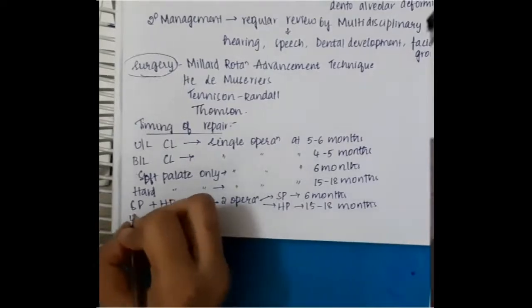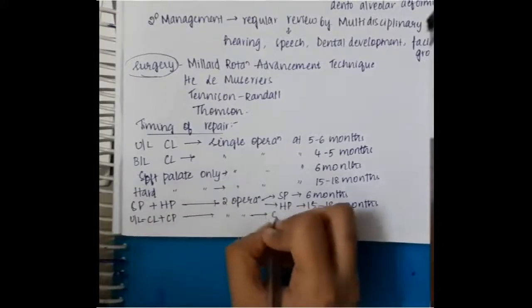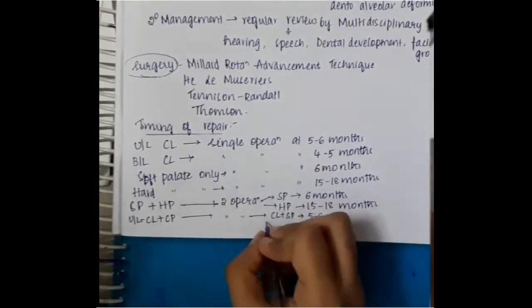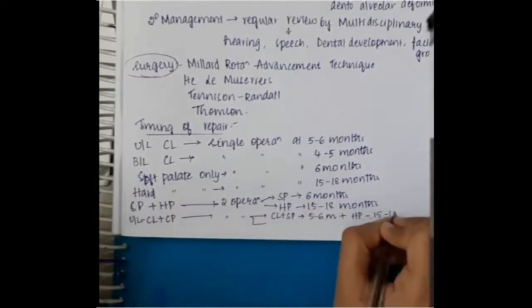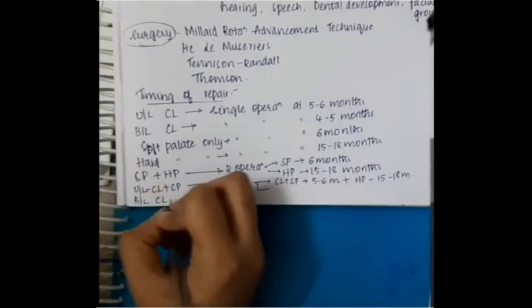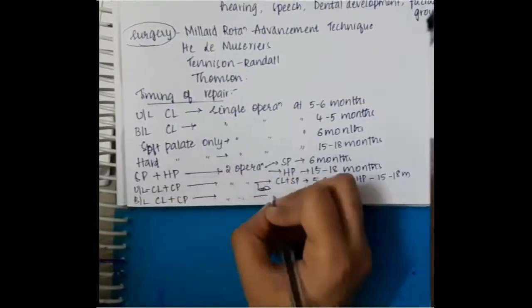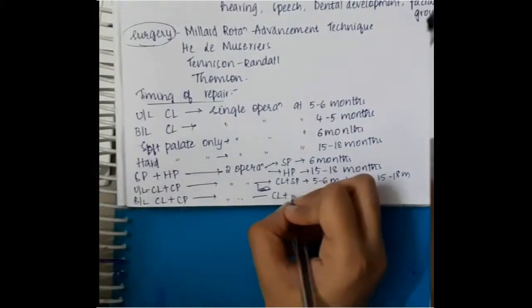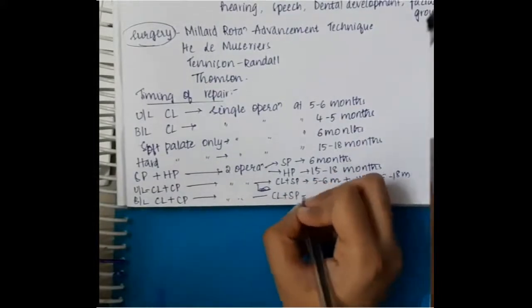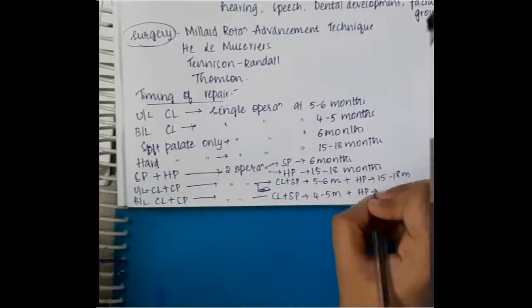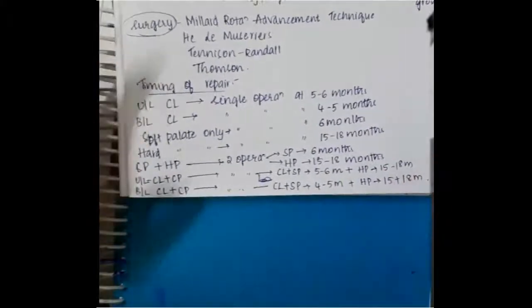If there is unilateral cleft lip with cleft palate, then two operations are done. One for cleft lip and soft palate at 5 to 6 months and the other for hard palate at 15 to 18 months. If there is bilateral cleft lip and cleft palate, then one surgery for cleft lip and soft palate is done at 4 to 5 months and for hard palate it is done at 15 to 18 months of age.